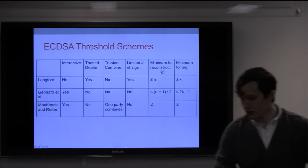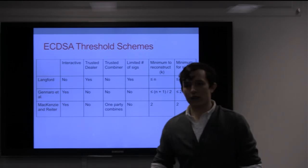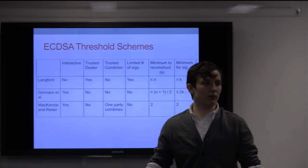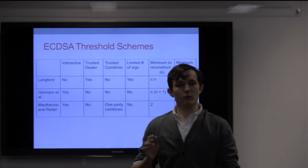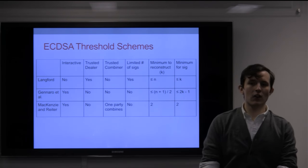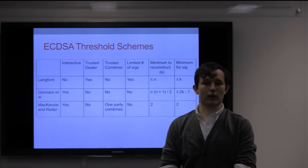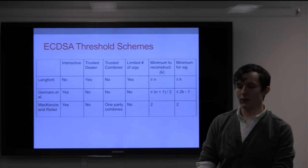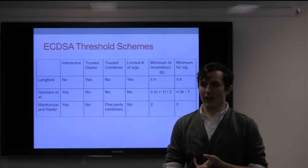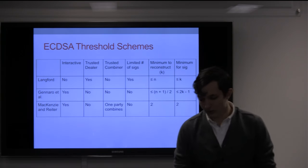A couple of threshold schemes exist. Langford has one where you have a trusted dealer, and the dealer calculates for transactions a bunch of Ks (the nonces), multiplicative inverses, and the multiplicative inverse times the order of the elliptic curve, then splits those into shares and distributes them. You'll be able to reconstruct the signature with the same amount of key shares, which gets the property that you never have to reconstruct the key on a device. But the issue is that central party you may or may not trust, and you have a limited number of signatures.